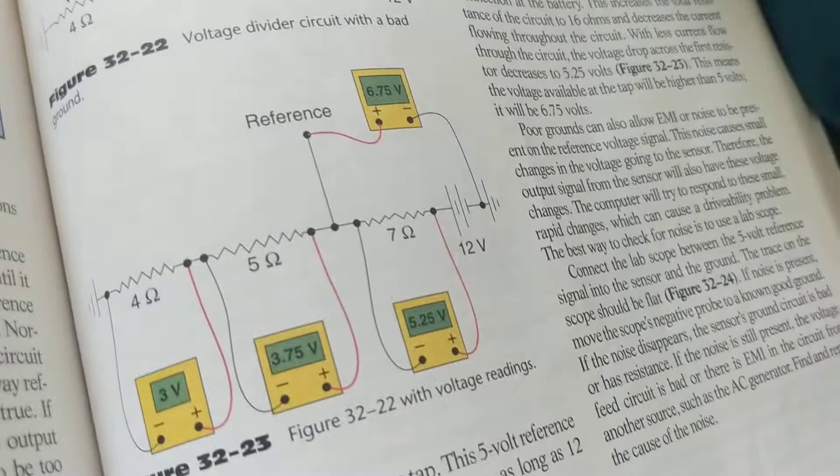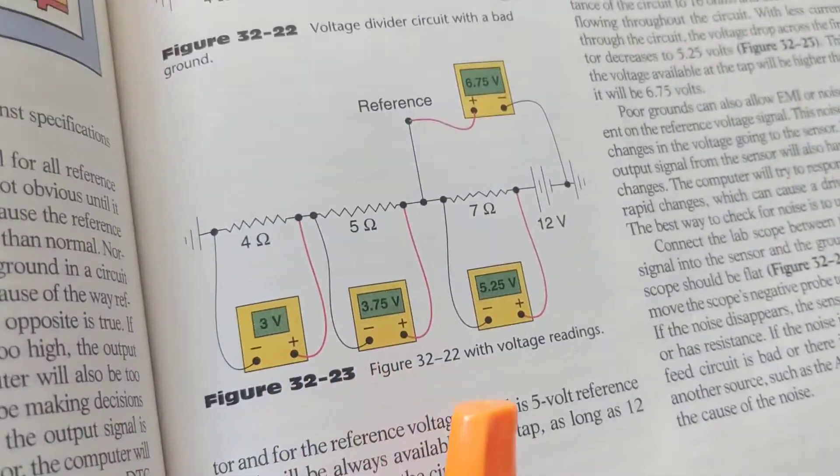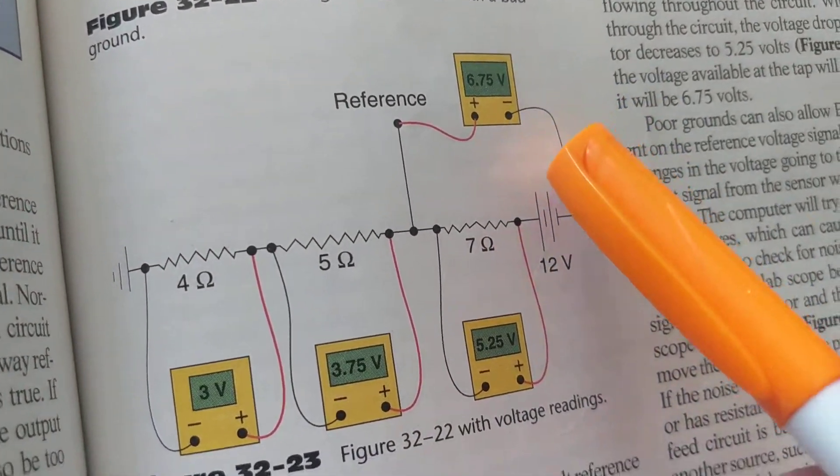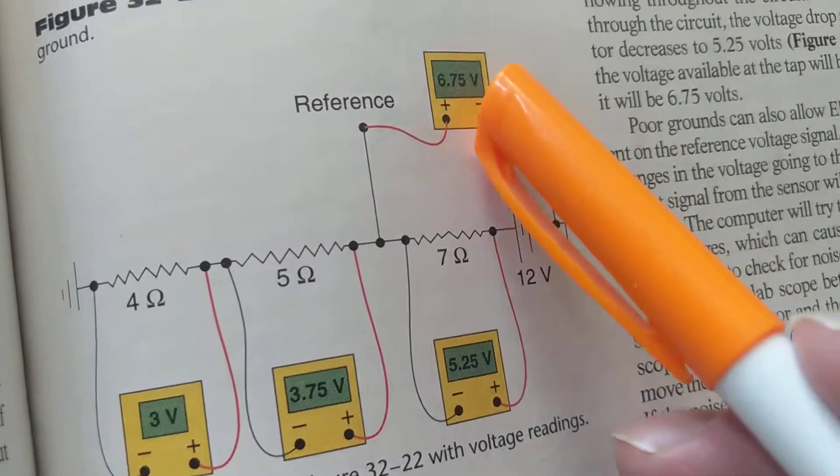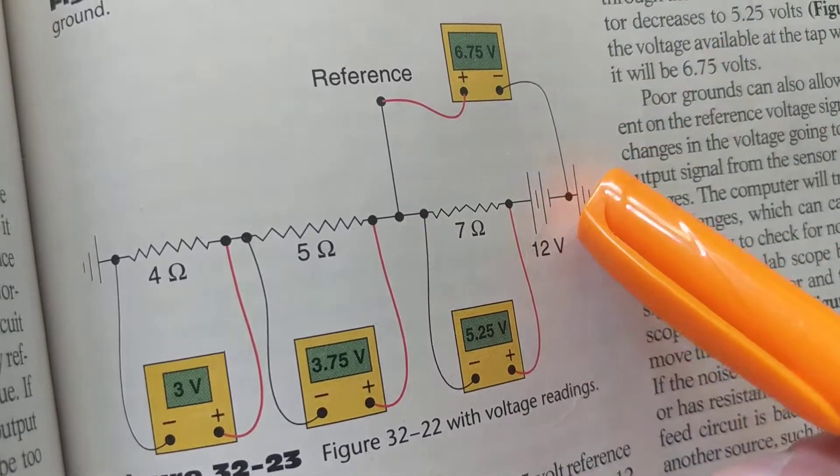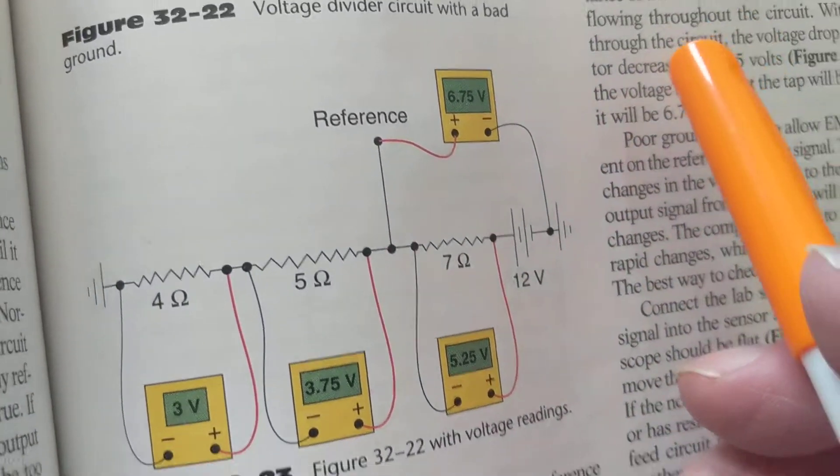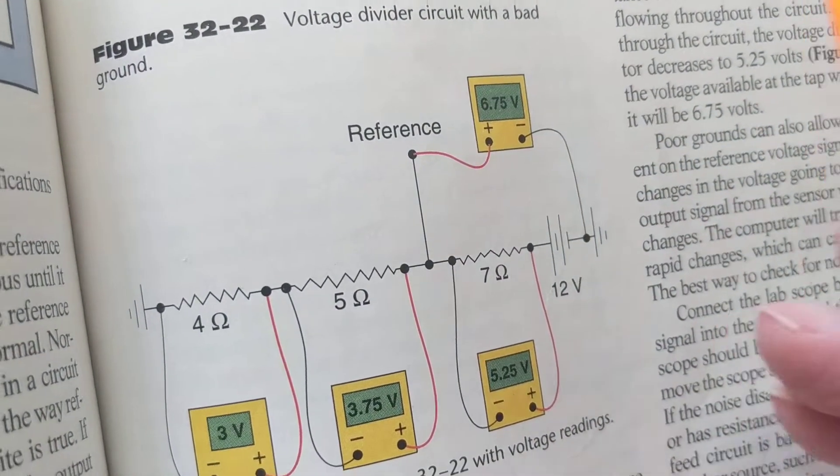Let's take another example. Now whenever you measure anything with a voltmeter, always put ground first. That's the rule. Always take the negative meter, whether you're using the negative terminal of the battery, chassis ground, alternator ground, engine block ground, wherever you choose to decide, negative always goes first. It's a rule.